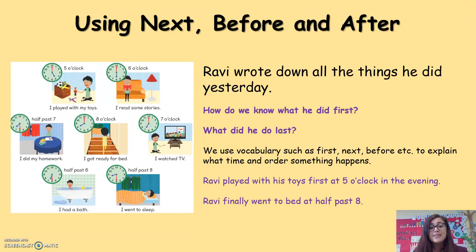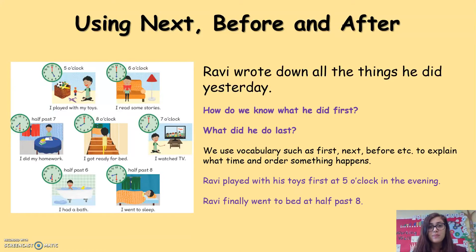Let's look at the things that Rabbi did yesterday. How do we know what he did first and what he did last? We can look at the clocks to help us. Rabbi played with his toys at five o'clock in the evening, and Rabbi finally went to bed at half past eight. What other things did Rabbi do during the day? What did he do before he went to sleep?